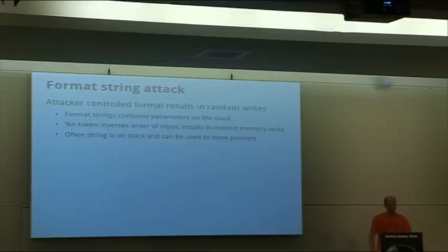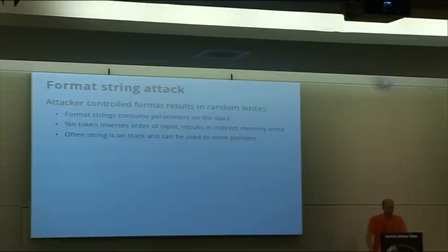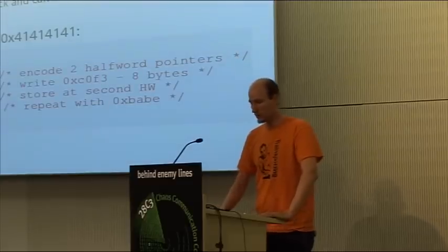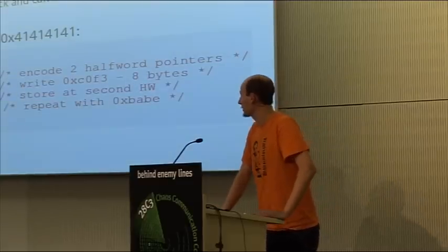If you use the %n token — a very special feature from old Unix versions — it basically results in an arbitrary memory write. We redirect the input and no longer consume values from the stack but write to a specific location somewhere in memory that we can control. If the string is on the stack, we can also use the same string to store pointers and basically write any data somewhere to memory if we construct the string carefully. So we want to write 0xCOFFEEBABE to 0x41414141.